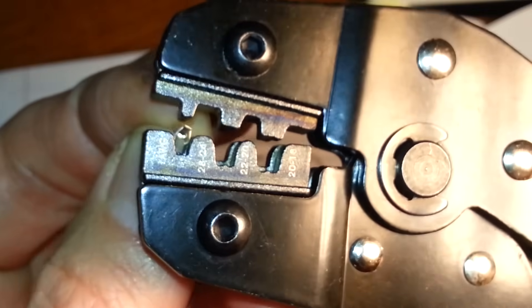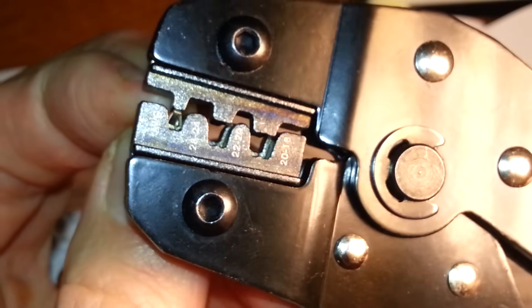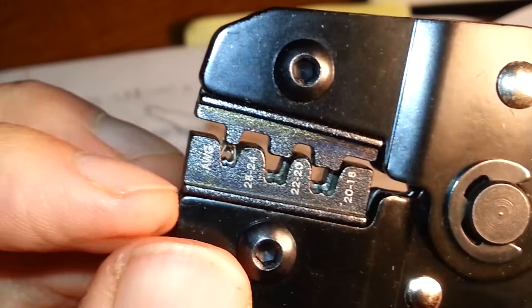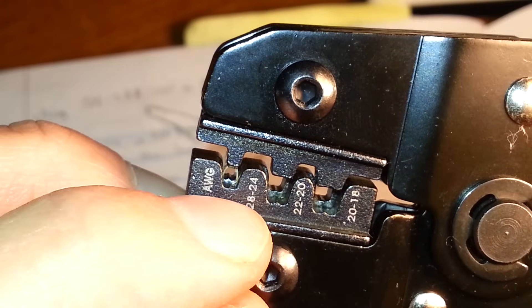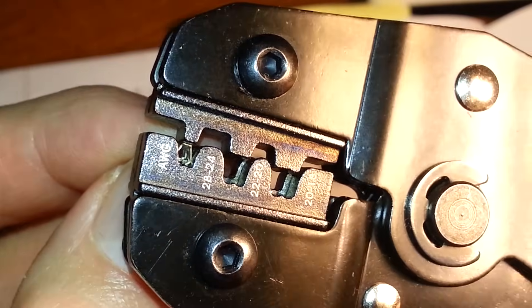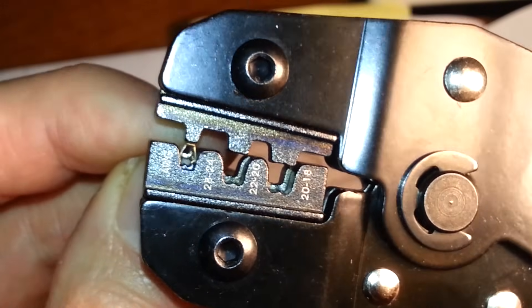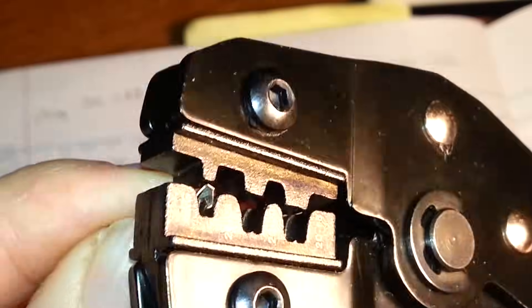There it goes. Okay, the only reason to do that is so it'll fit into the next one, because sometimes those wings, they don't fit into the small 26 to 24 gauge slot. Okay, so just click it, I think, one or two times until it holds it. And notice, oh, here's the big trick.